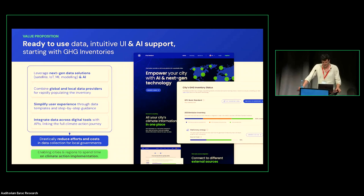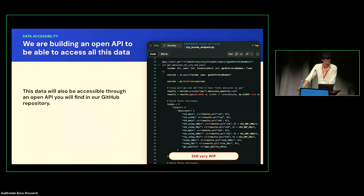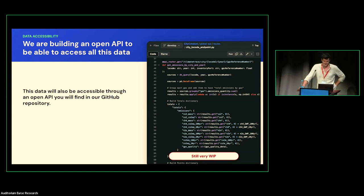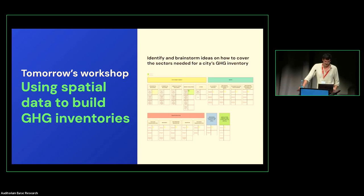We're building an open API to access all this data. We'll collect open data from different spatial data providers and adapt it to be used in GHG inventory frameworks, as well as some private data we're trying to get access to. In tomorrow's workshop, we'll go deeper into how to actually use spatial data to build GHG inventories. It would be very useful to hear from people working on making data more practical and to figure out what's missing — mapping the gaps and thinking about business models for this data.